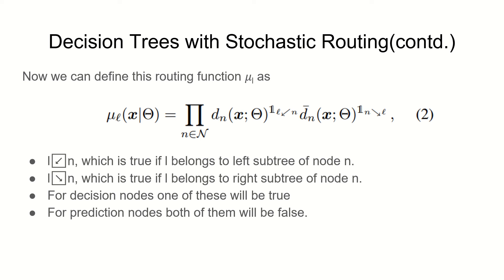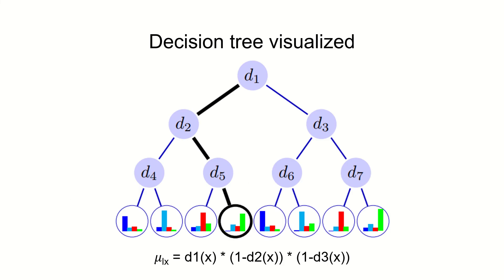If you are having a little bit of trouble just like me when I first read it, here is a visual example. We have DN functions at all internal nodes which is a routing function that says whether to go left or right. This black part shows the path for a random sample X.